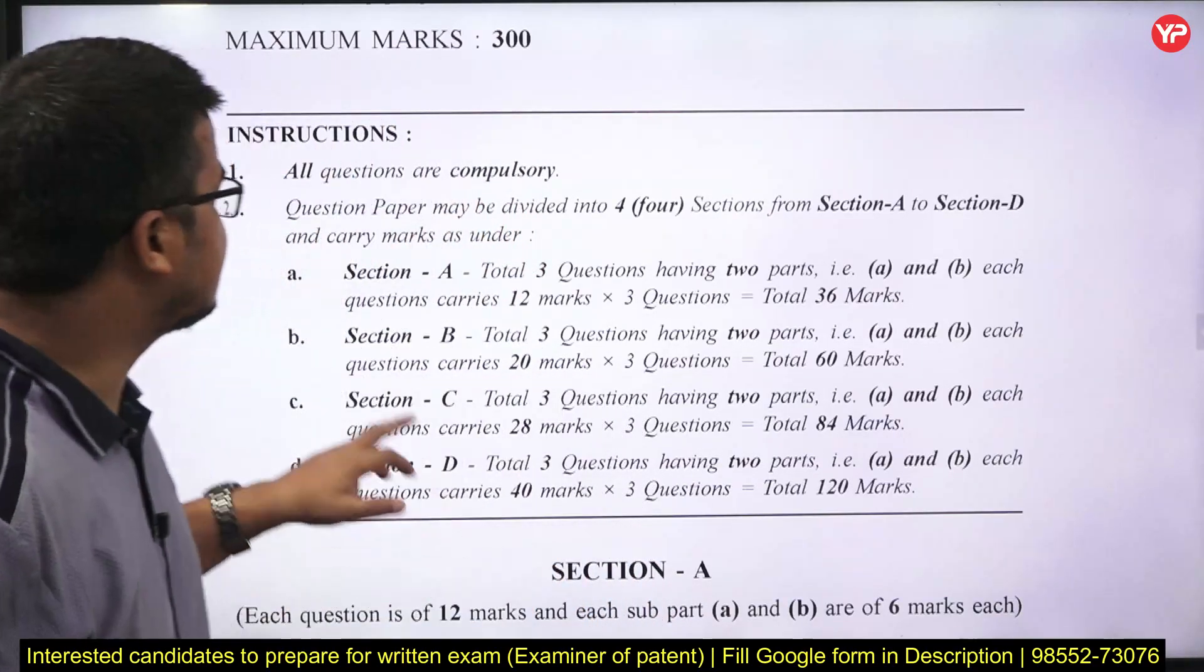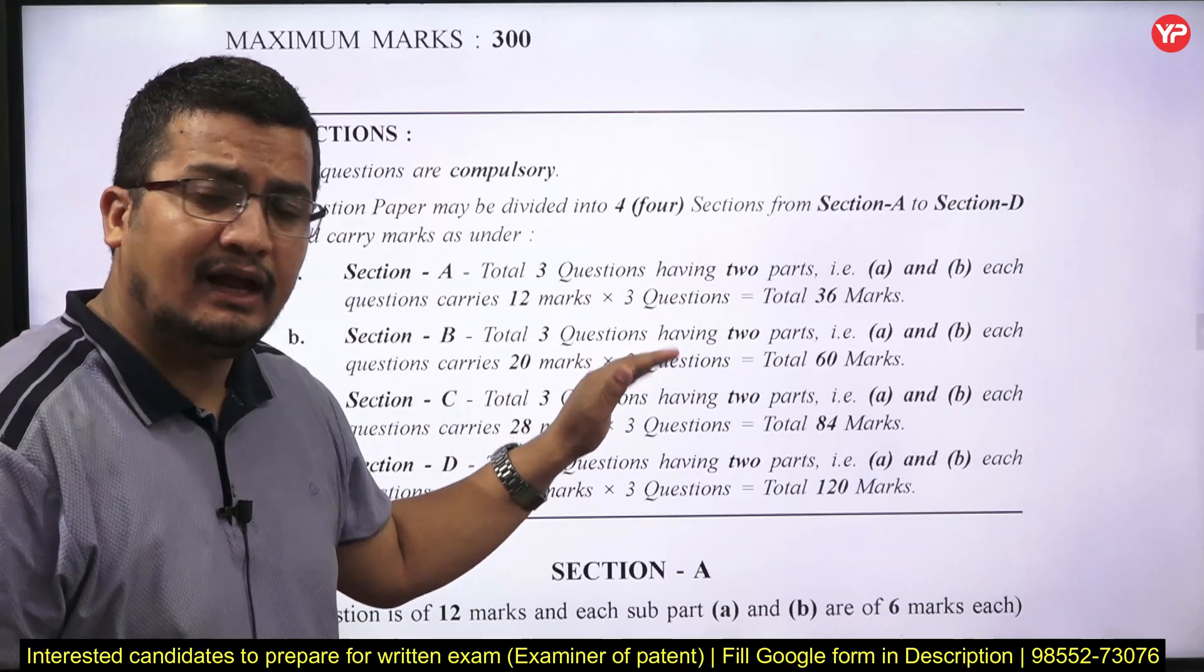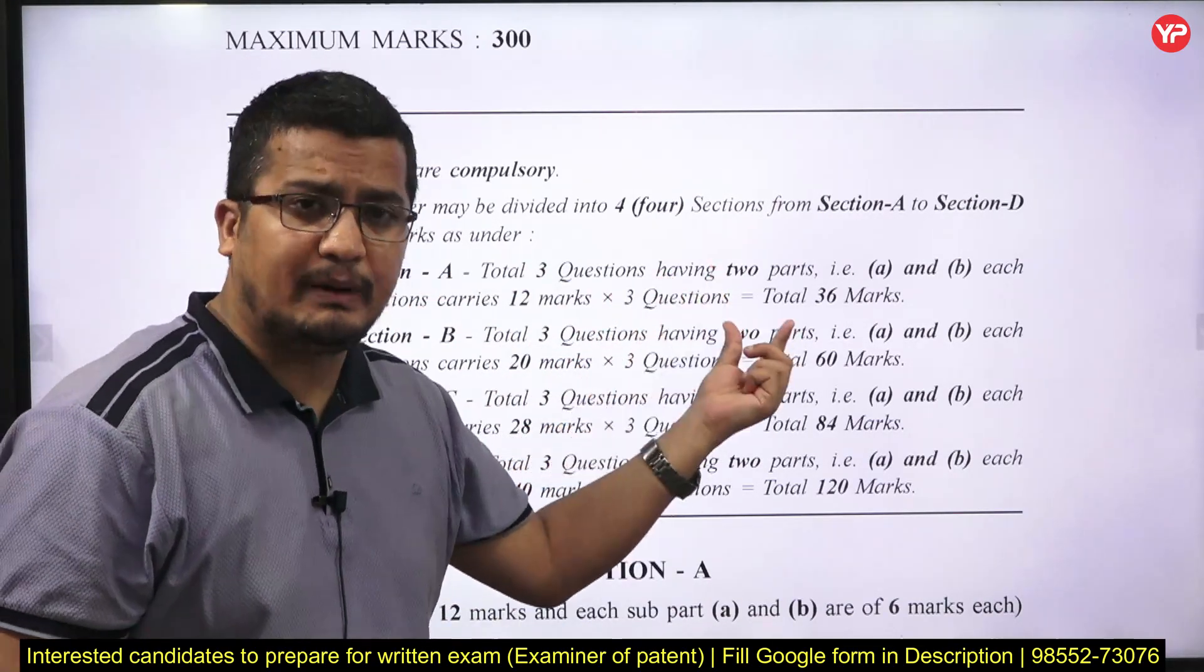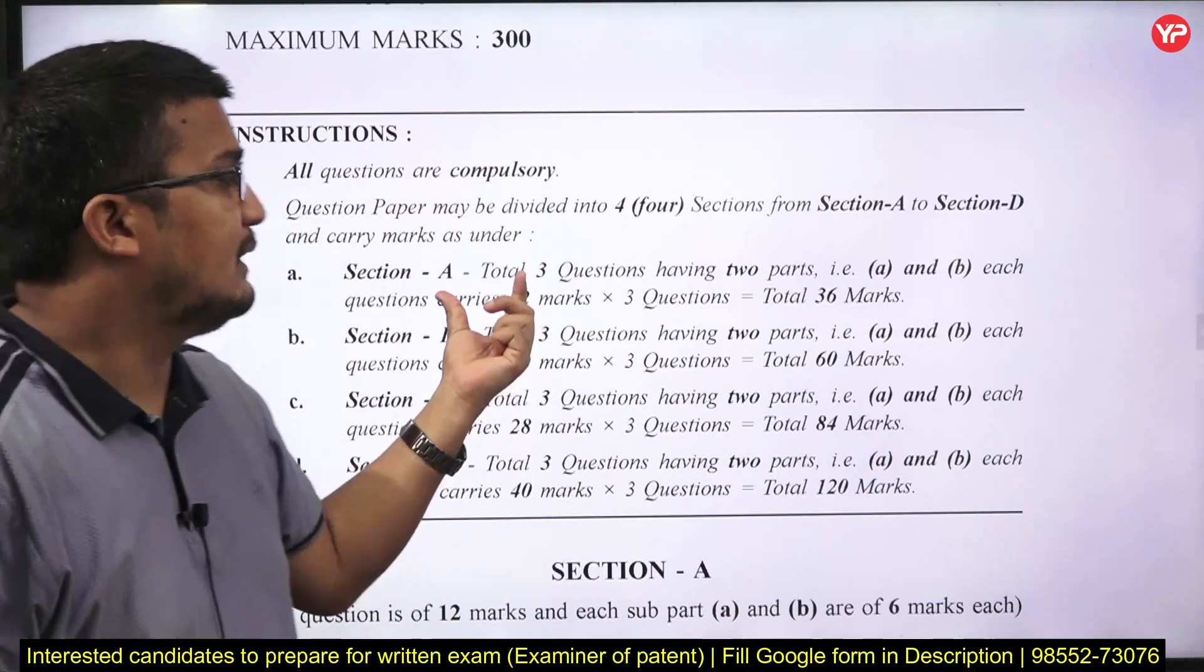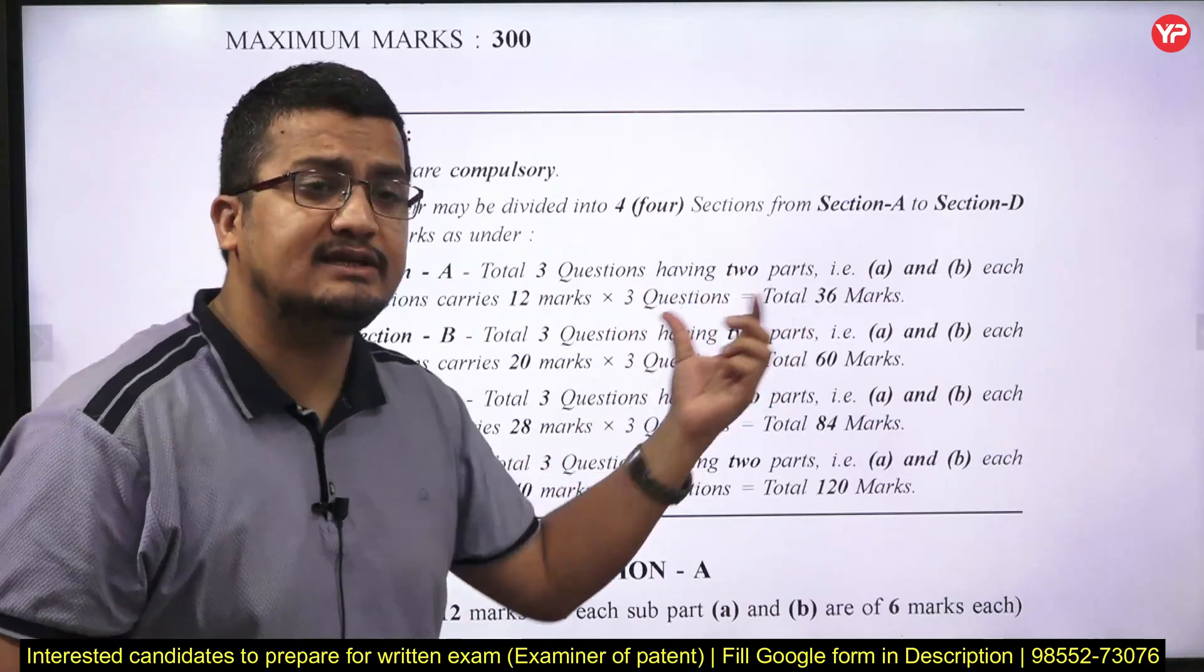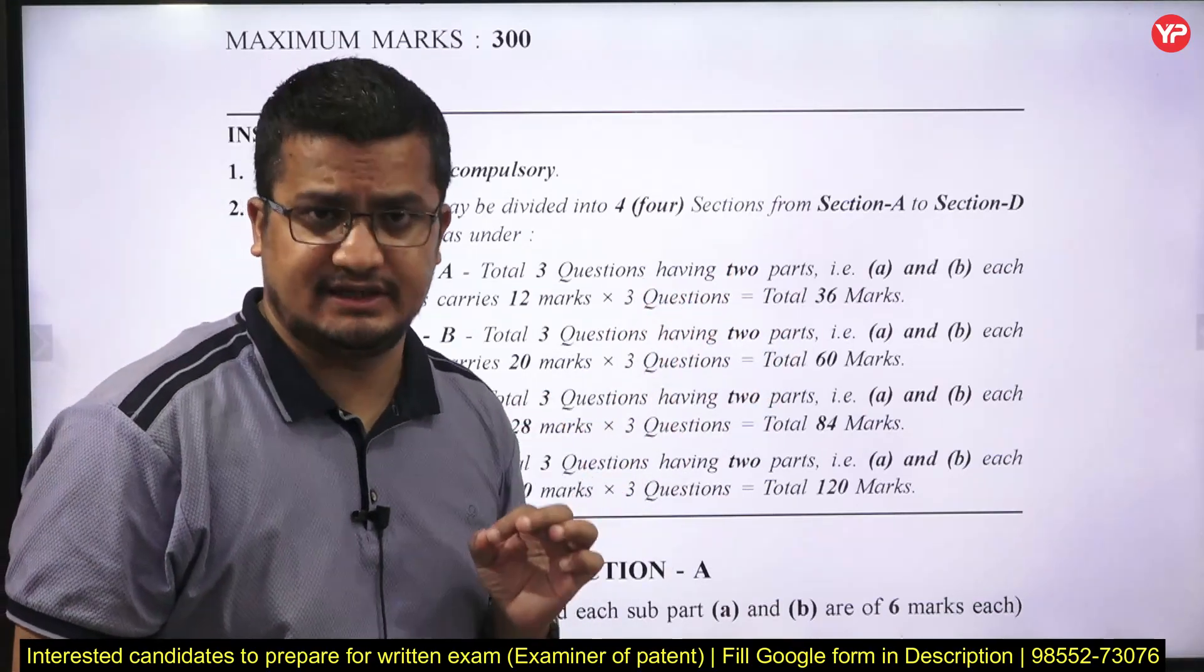The very first section, they have told there will be total 3 questions and each question will be having 2 parts A and B, and each question carries 12 marks. So 12 into 3, 36 marks you will get in the first section.